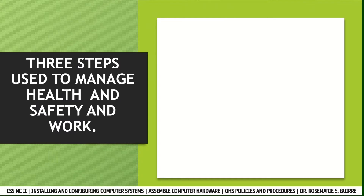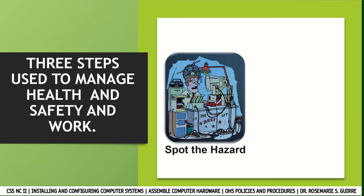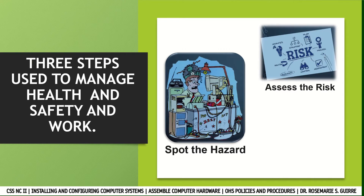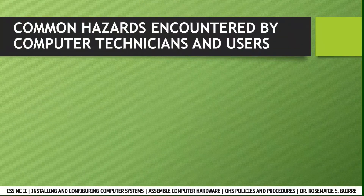The three steps used to manage health and safety at work. The first is to spot the hazard. A hazard is anything that could hurt a worker or someone else. Examples of workplace hazards include frayed electrical cords which could result in electrical shock, boxes not secured which could fall on someone, and noisy machinery which could result in damage to your hearing. The second step is risk control — assessing the risk means working out how likely the hazard will harm someone and how serious the harm could be. The third step is to make the changes, which requires employees to have training before using equipment and to always ask for help when moving or lifting heavy objects.